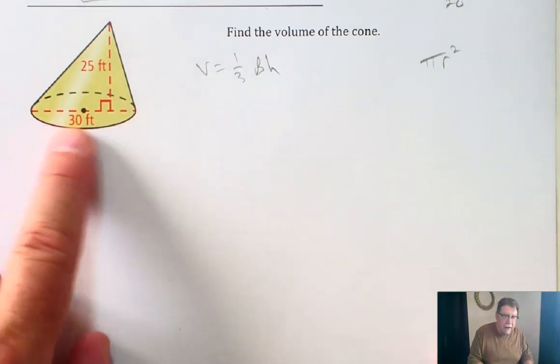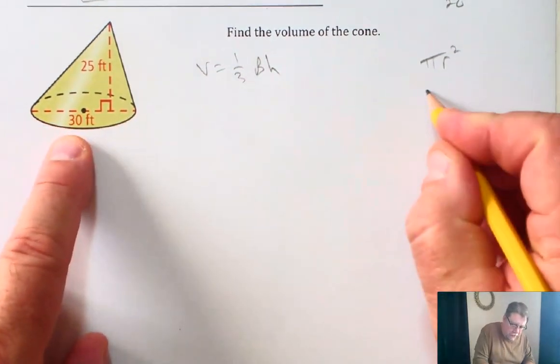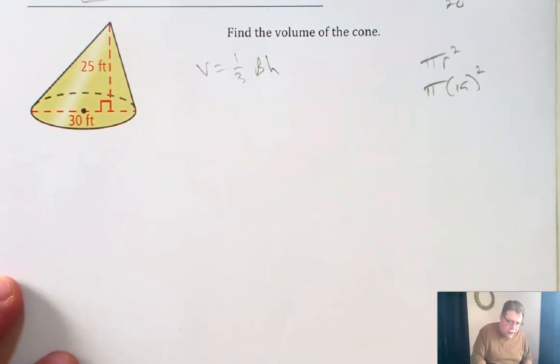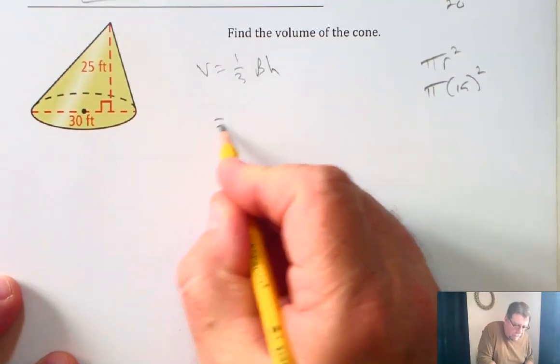The radius is going to be half of 30, so the radius is 15. So pi times 15 squared is what we're going to look at. 15 squared is 225.